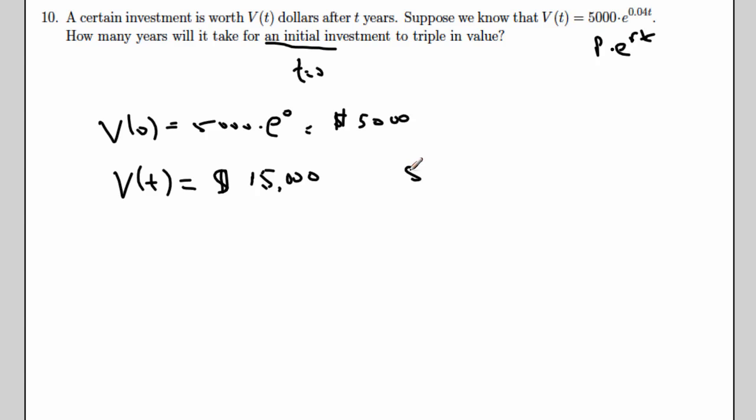So that means I have the equation that 5,000 e to the 0.04t is equal to 15,000. And my goal is just to solve for t.